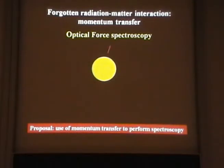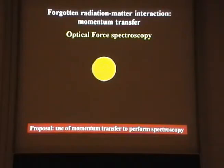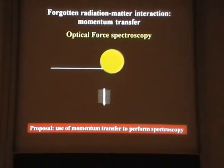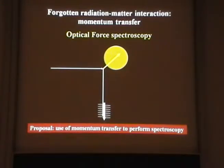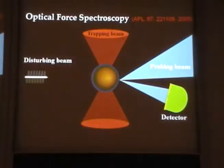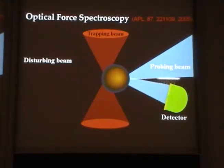But there is one interaction of radiation and matter that has not been used for spectroscopy — that's the momentum transfer. We use it for trapping purposes, but we do not use it to perform spectroscopy. Because we are going to change the direction of the particle as soon as the light gets scattered, it's usually much easier to just scatter the light. But we want to show the proof of concept that we can use this interaction to perform spectroscopy.